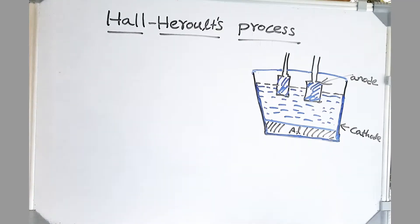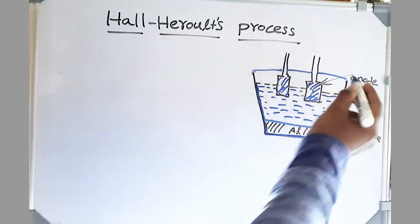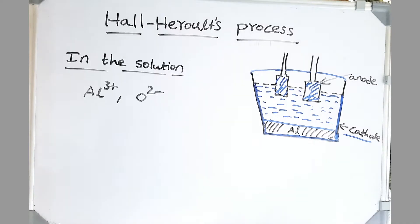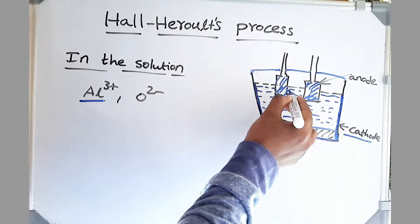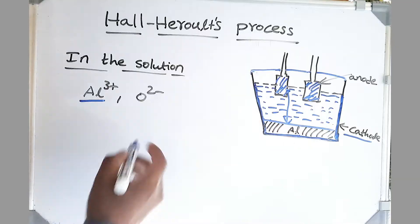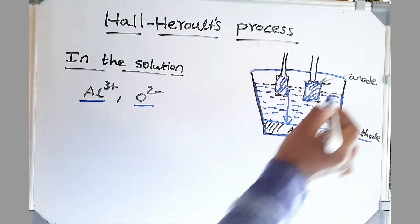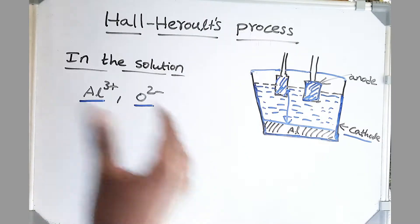Now let's see Hall-Héroult's process. It is a steel cell coated with carbon which acts as cathode, and graphite electrodes act as anode. The electrolyte used is cryolite, Na3AlF6. We operate this cell at a temperature greater than the melting point of Na3AlF6, which is 960 to 980 degrees. When we pass electricity, Al3+ gains three electrons and drops to the bottom. The oxygen converts to CO or CO2 by reacting with our electrodes. So the electrodes are consumed and have to be replaced frequently.